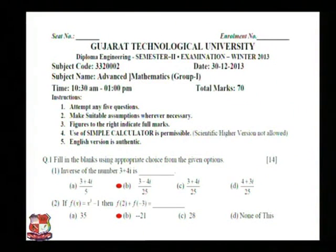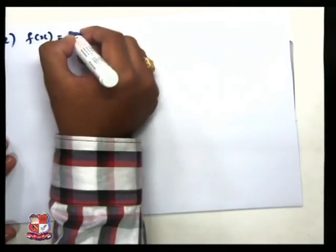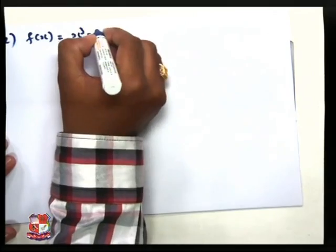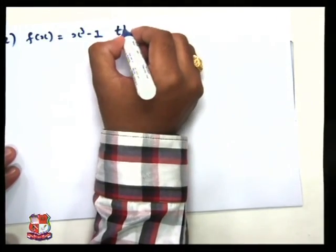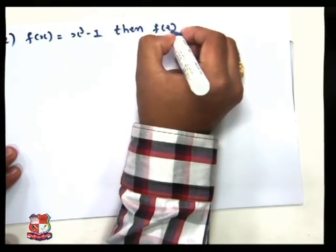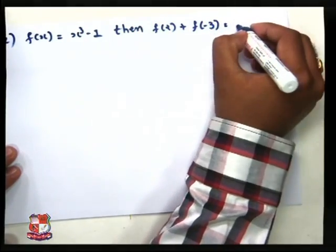Now move to our second question. The second question is: f of x is equal to x cubed minus 1, then f of 2 plus f of minus 3 is equal to blank.